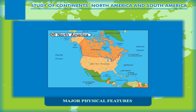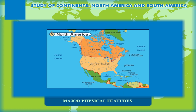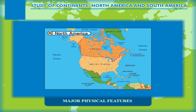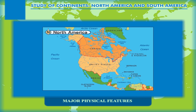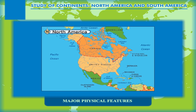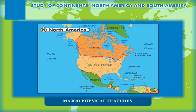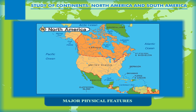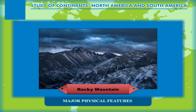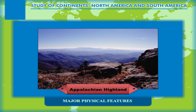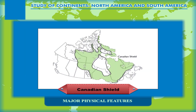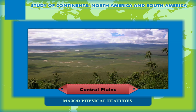Major physical features: the topography of North America comprises several spectacular features. Broadly speaking, these physical features may be studied under the following heads: Western Cordilleras including Rocky Mountains, Eastern Highlands or Appalachian Highlands, Canadian Shield, and Central Plains including the prairies.